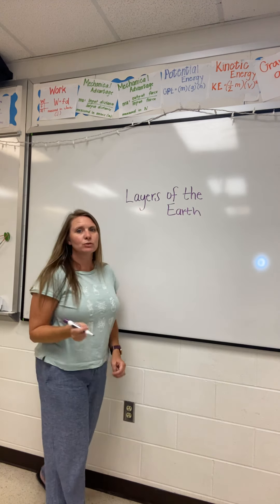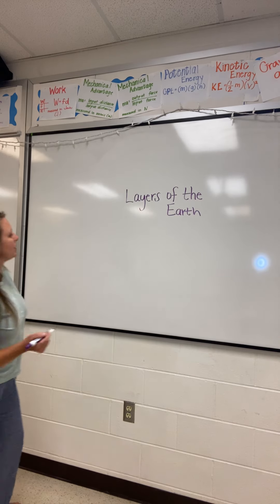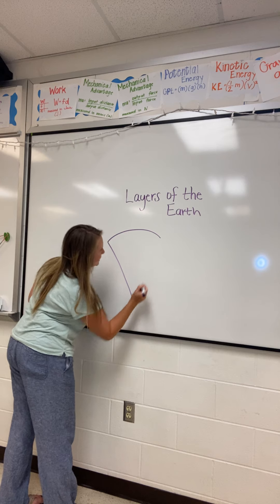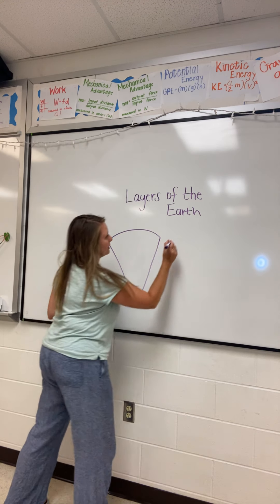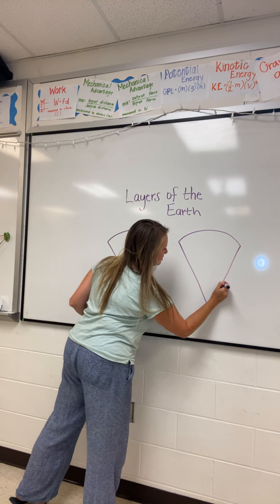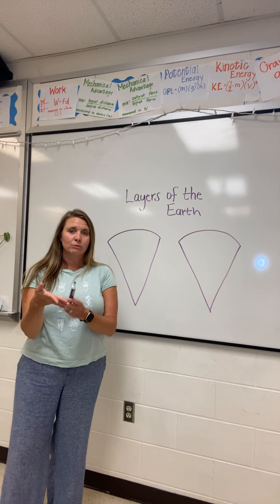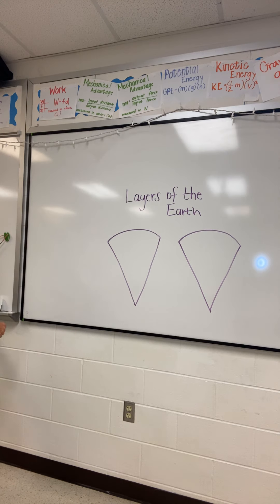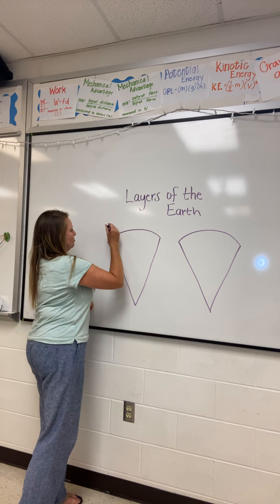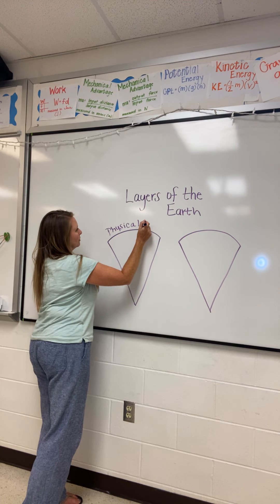Hopefully you can see that pretty well. We're going to draw two different layers here, and I'm going to draw them like a pizza pie. We're going to pretend we're going down to the core of the earth. There are two different ways we can look at the earth's structure. I'm going to start with the simpler model, which you probably already know, and then move into a more detailed model. The first is called the physical model.